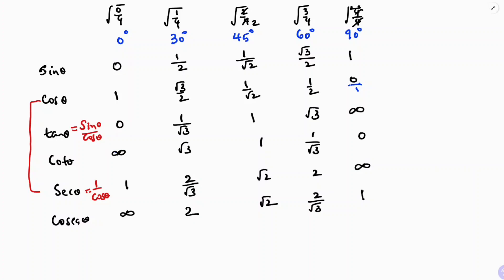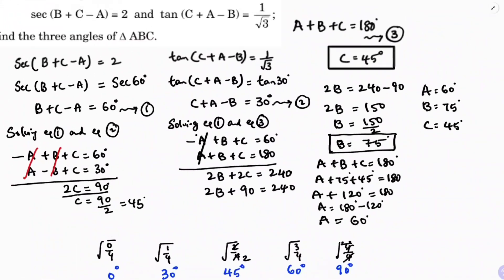In the previous problem I used these table values: sec theta equals 2 was found for 60 degrees, and tan 30 equals 1 by root 3. With the help of this trigonometric table, I simplified the problem.